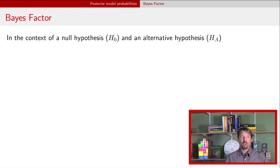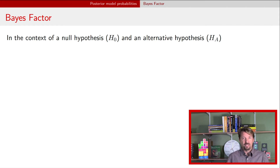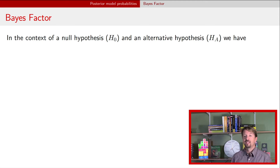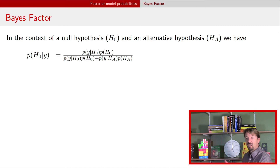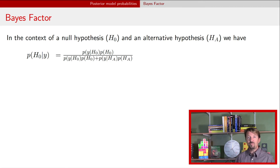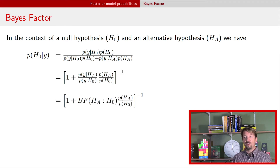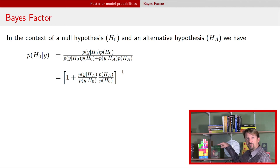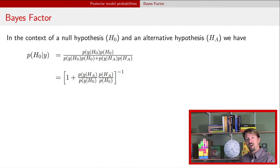Now consider just two models — a null hypothesis and an alternative hypothesis — to compare to non-Bayesian approaches. If we have just those two hypotheses, we can calculate the posterior probability of the null using Bayes rule, where the denominator involves only those two models. Rearranging, we get two ratios: the ratio P(HA)/P(H0) is called the prior odds in favor of the alternative hypothesis, which we calculate directly from our prior over models.